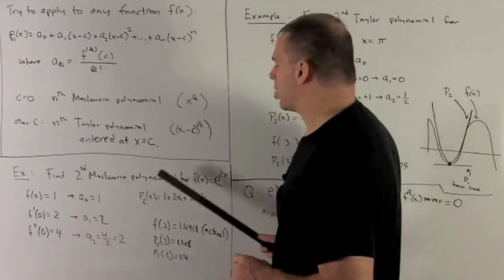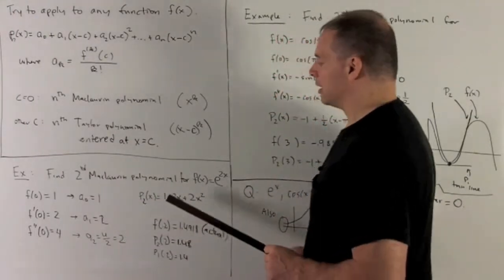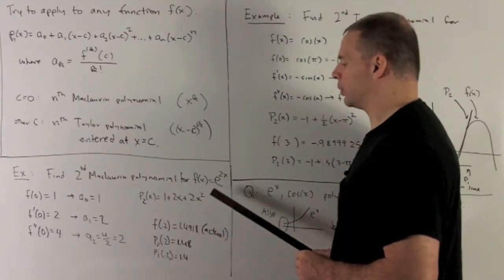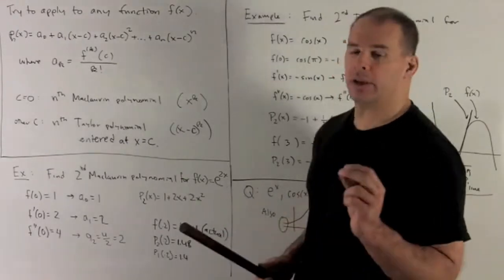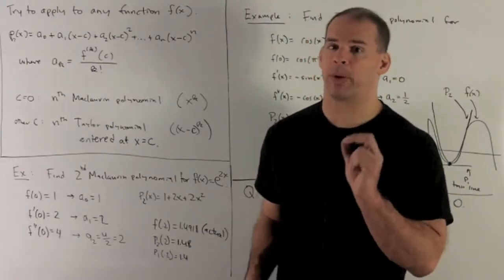So the second Maclaurin polynomial is just load these coefficients up against powers of x. So we have 1 plus 2x plus 2x squared. Of course, I'm always going to go back to why we're doing this in the first place, to approximate.